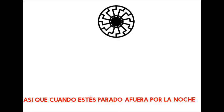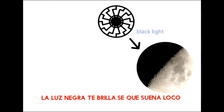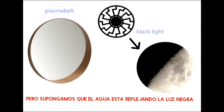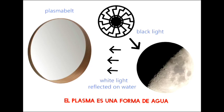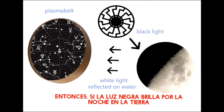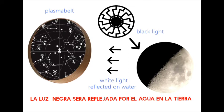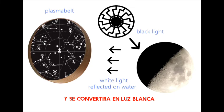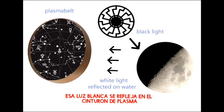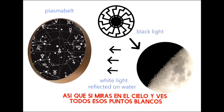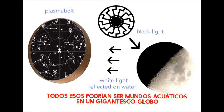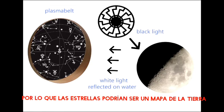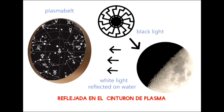So when you are standing outside at night, the black light is shining on you. I know it sounds crazy. But let's assume that water is reflecting black light and turning it into white light. Plasma is a form of water. So if the black light is shining at night on the earth, the black light will be reflected by the water on the earth and it will become white light. That white light will reflect on the plasma belt. So if you look in the sky and you see all those white dots, that could be all water worlds on a gigantic globe. The stars would be a map of the earth reflected on the plasma belt.